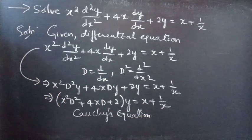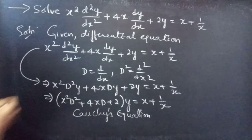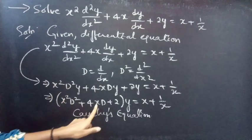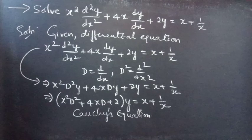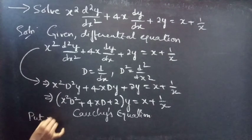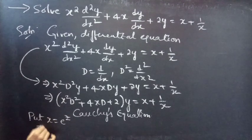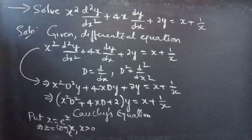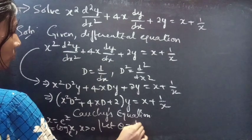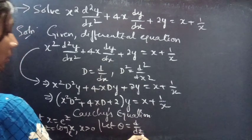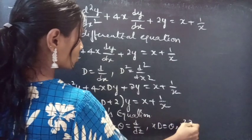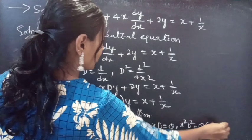Now let's make a substitution to reduce this equation to one with constant coefficients. We will change the variable coefficients to constant coefficients by putting x equals e^z, so z equals log x (base e) for x greater than 0. Let theta equal d/dz, the differential operator with independent variable z. Then xD equals theta and x²D² equals theta(theta minus 1).